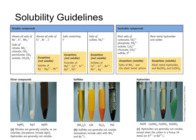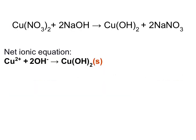Here we see an example of a net ionic equation. We have the reaction of copper(II) nitrate plus sodium hydroxide reacting to give us copper(II) hydroxide and sodium nitrate. The net ionic reaction in that equation is our Cu2+ ion plus 2 hydroxide ions reacting to give us our copper(II) hydroxide precipitate. The net ionic equation shows us the real reaction that's going on. We'll take a look at how to write these over the next few slides.